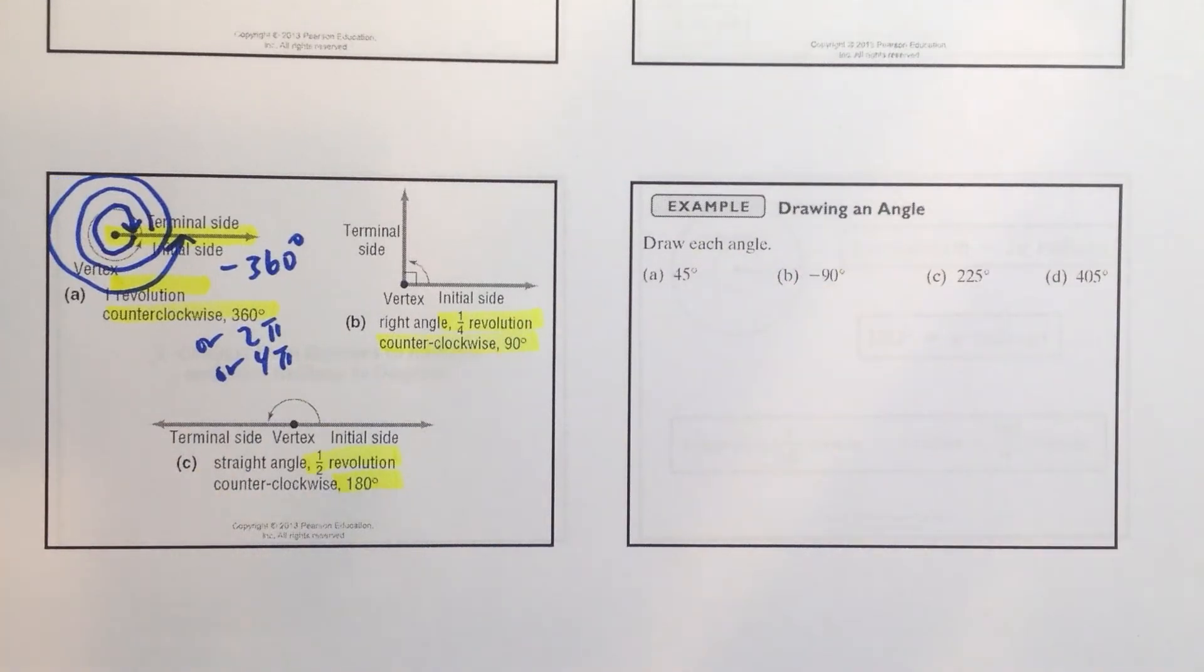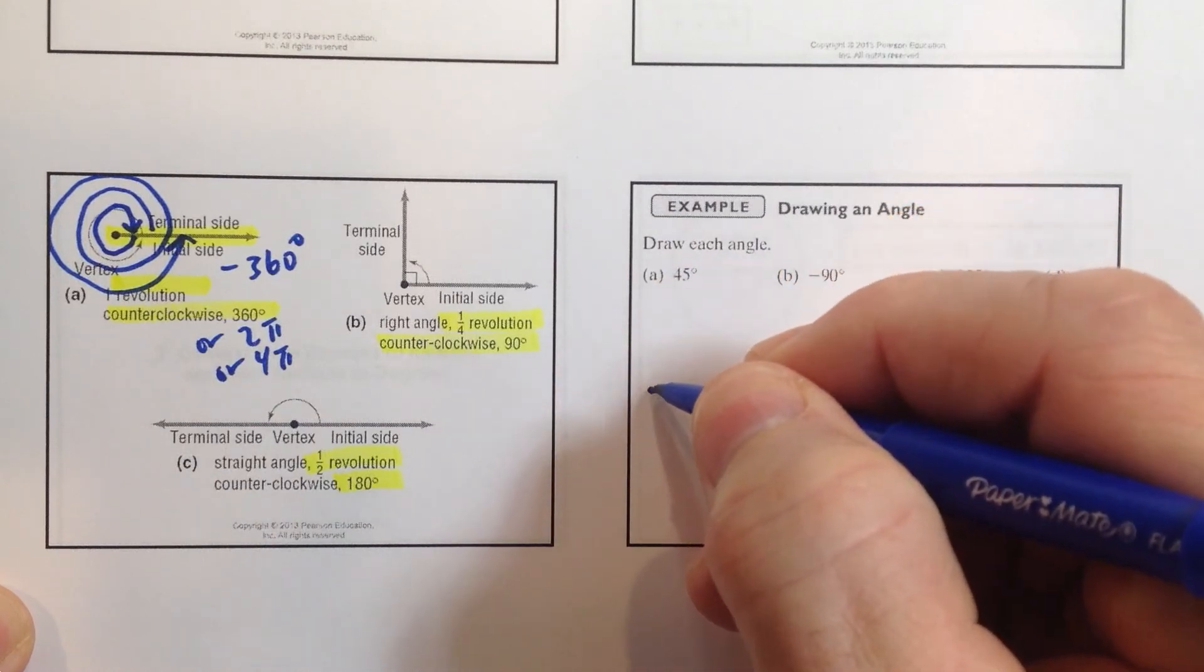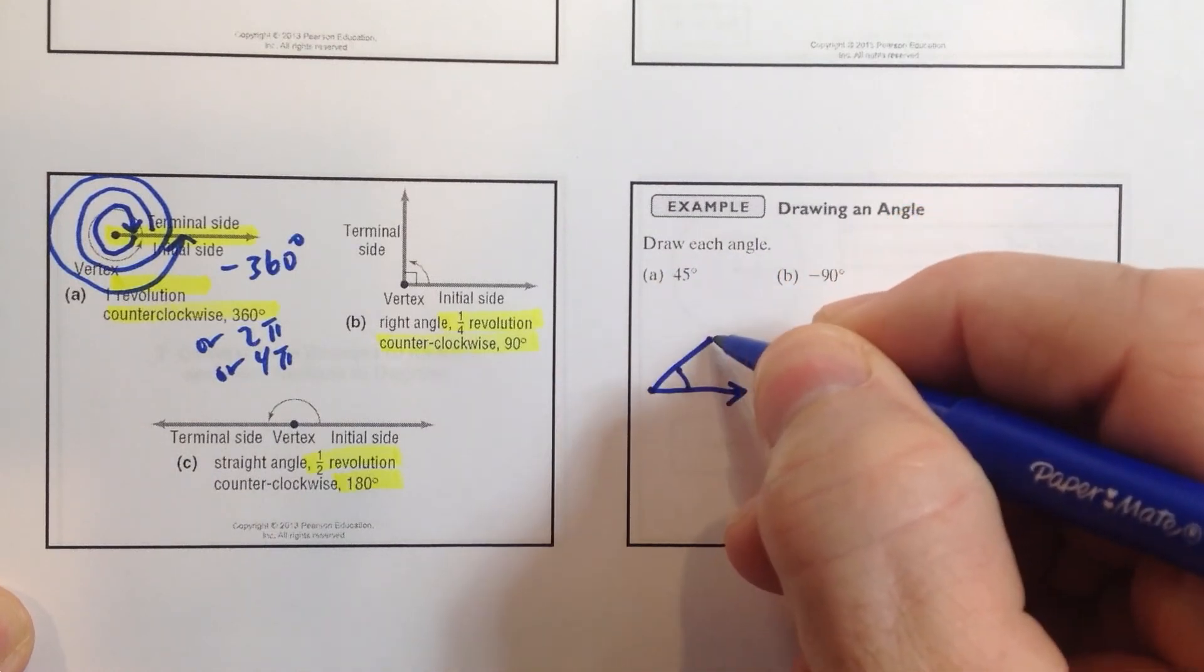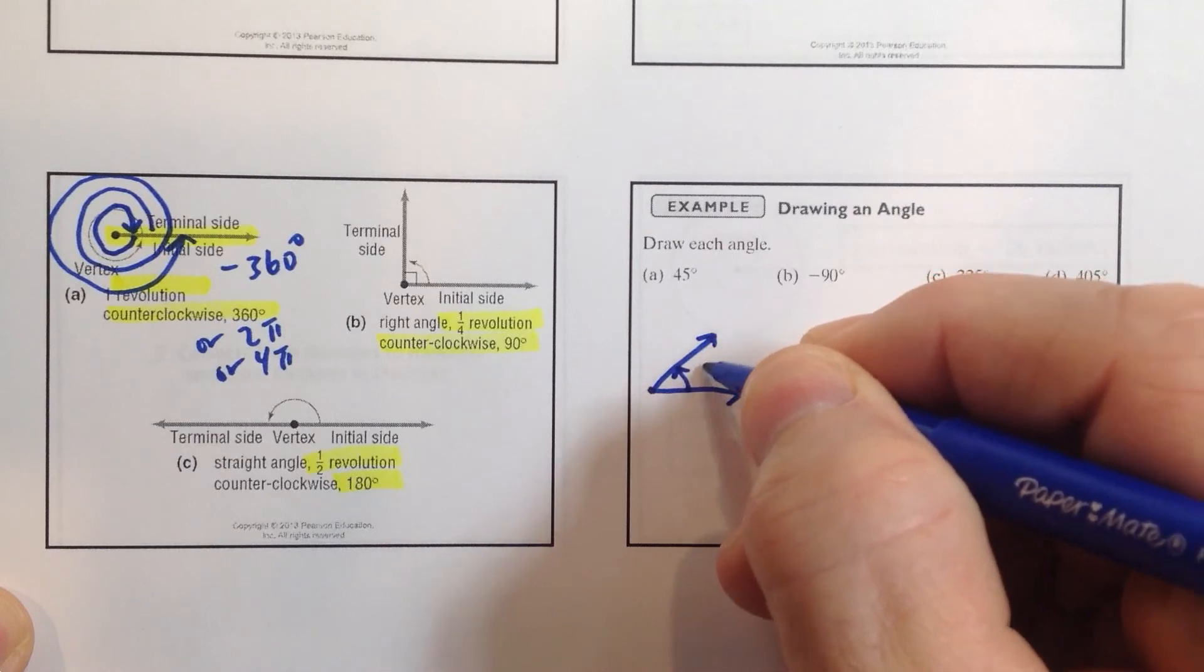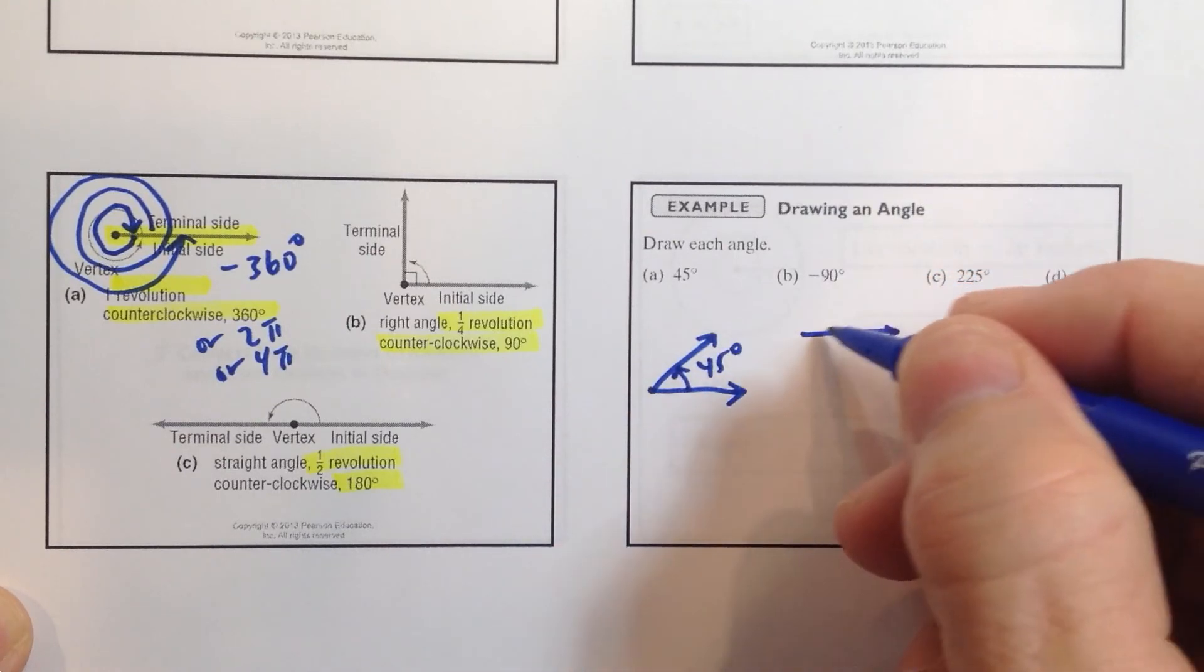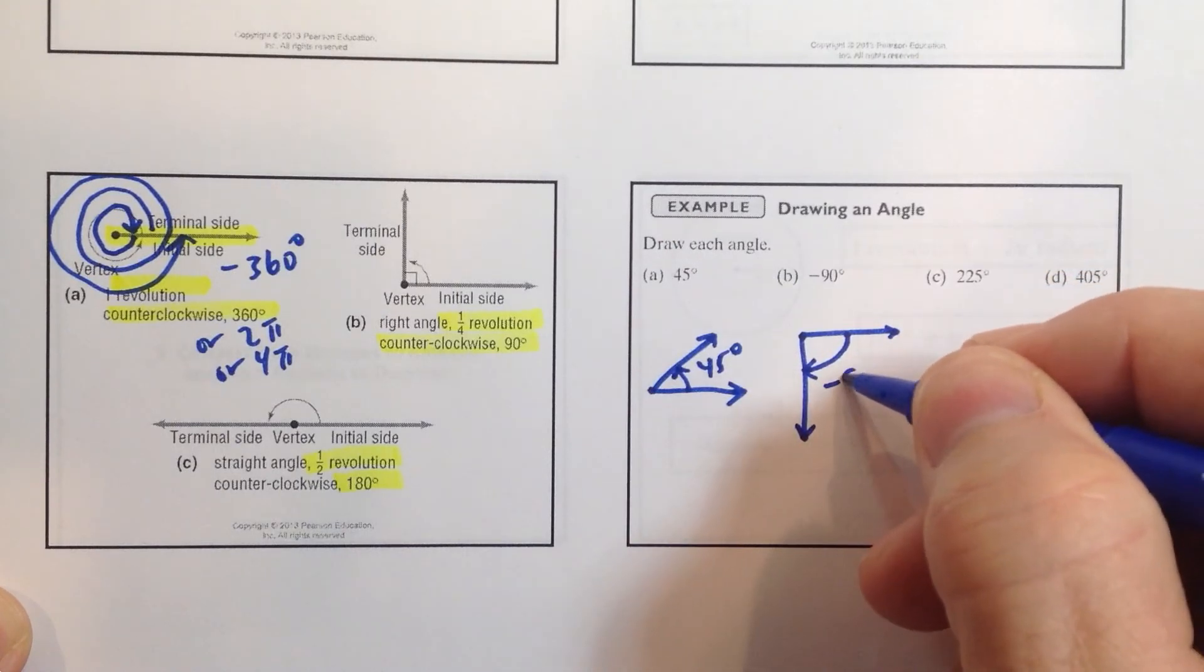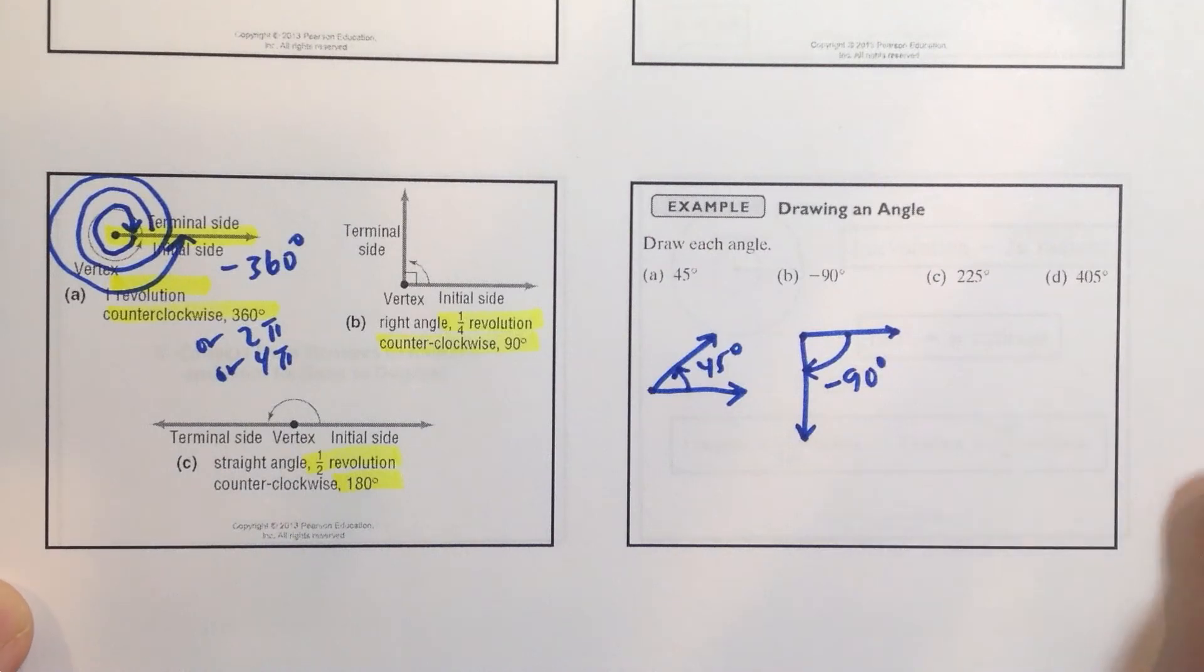So, how do we draw an angle? Well, we start with an initial side. 45 degrees. We go up 45 degrees. And that would be a 45 degree angle. 90 degrees. We go in this direction, 90 degrees. And so, we have the angle of negative 90 degrees.